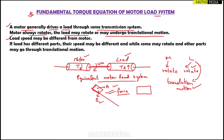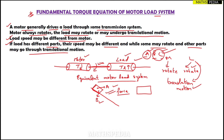Third point: the load speed may be different from the motor speed — it may be different or it could be the same. Fourth point: if the load has different parts — say A, B, C — their speeds may be different, and while some parts may rotate, other parts may undergo translational motion. These are all the possibilities in a motor-load system.